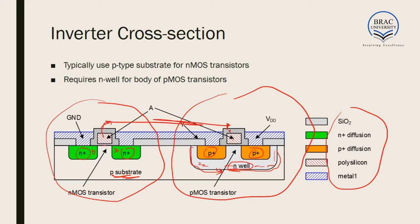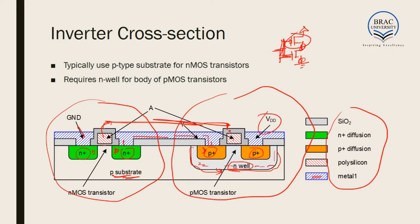The polysilicon gate of the PMOS is connected to the polysilicon gate of the NMOS. Looking at the inverter structure: the source of the PMOS is connected to VDD, the drain of the PMOS is connected to the drain of the NMOS, and the source of the NMOS is connected to ground. These connections are made via a metal layer. The two gates are connected to each other and to the input. This cross-section shows what the inverter looks like when cut through.